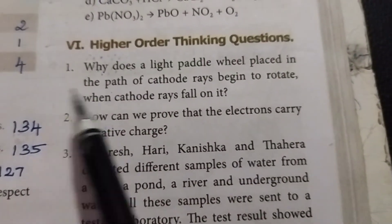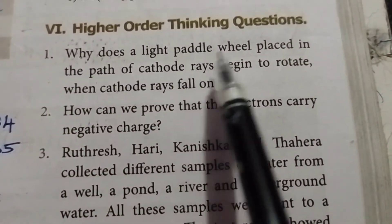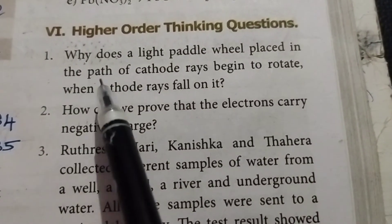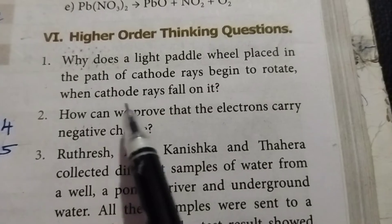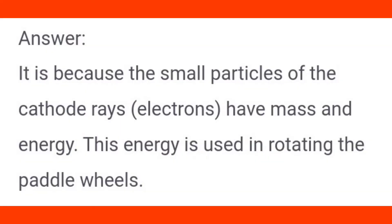Sixth Roman letter, higher order thinking questions. First one: why does a light paddle wheel placed in the path of cathode rays begin to rotate when cathode rays fall on it? Answer: it is because the small particles of the cathode rays, electrons, have mass and energy. This energy is used in rotating the paddle wheels.